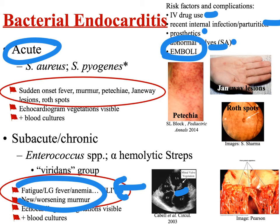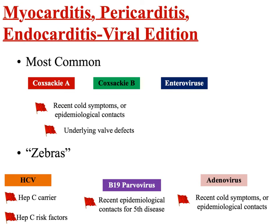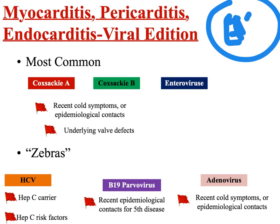Now I want to talk briefly about viral cardiac infections. Viral cardiac infections can be associated with myocarditis, pericarditis, or endocarditis, or one or more of those at the same time. The most common causes of viral cardiac infections by a wide margin are Coxsackie A, Coxsackie B, and various typed and untyped enteroviruses. Usually you see viral cardiac infections in patients that have underlying valve defects — one of the most common associations is having a prolapsed mitral valve, though you can't always rule this out since some patients may have structural defects not yet diagnosed.